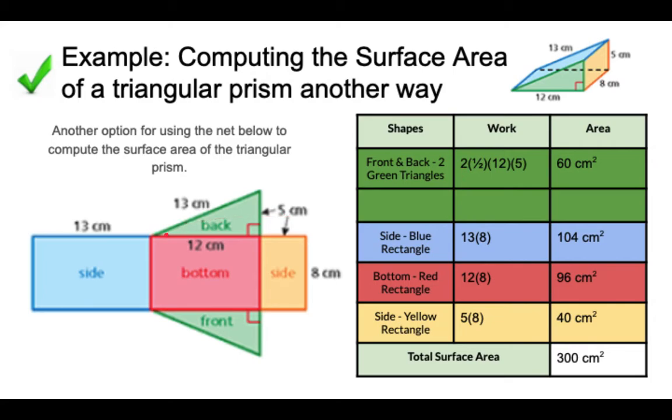So half times base is 12 centimeters, height is 5 centimeters, and I have two of them. So these cancel each other out, and then I just have 12 times 5 is 60.